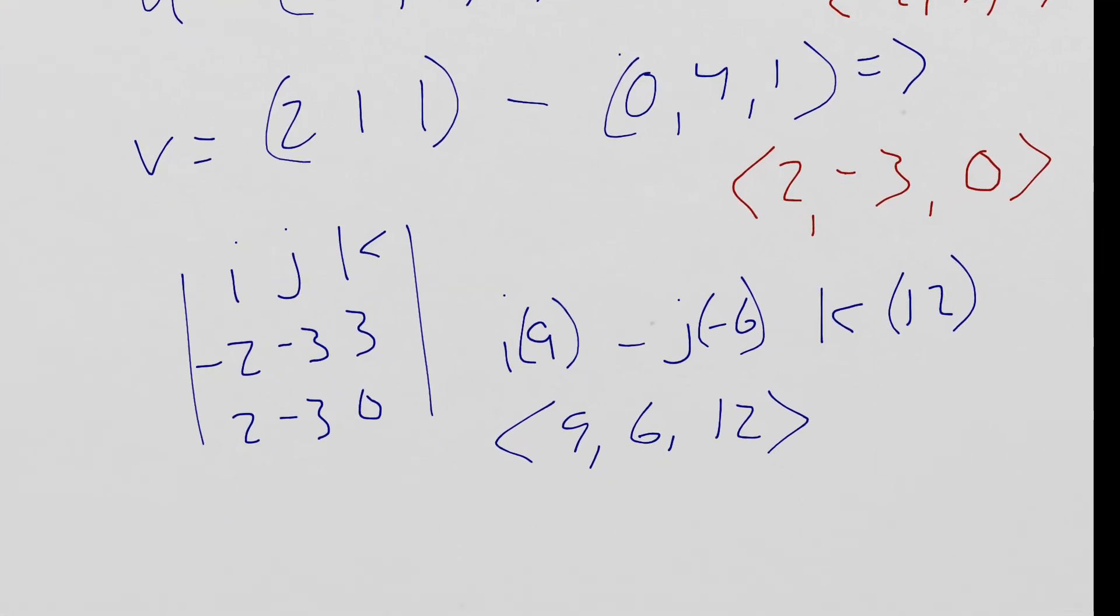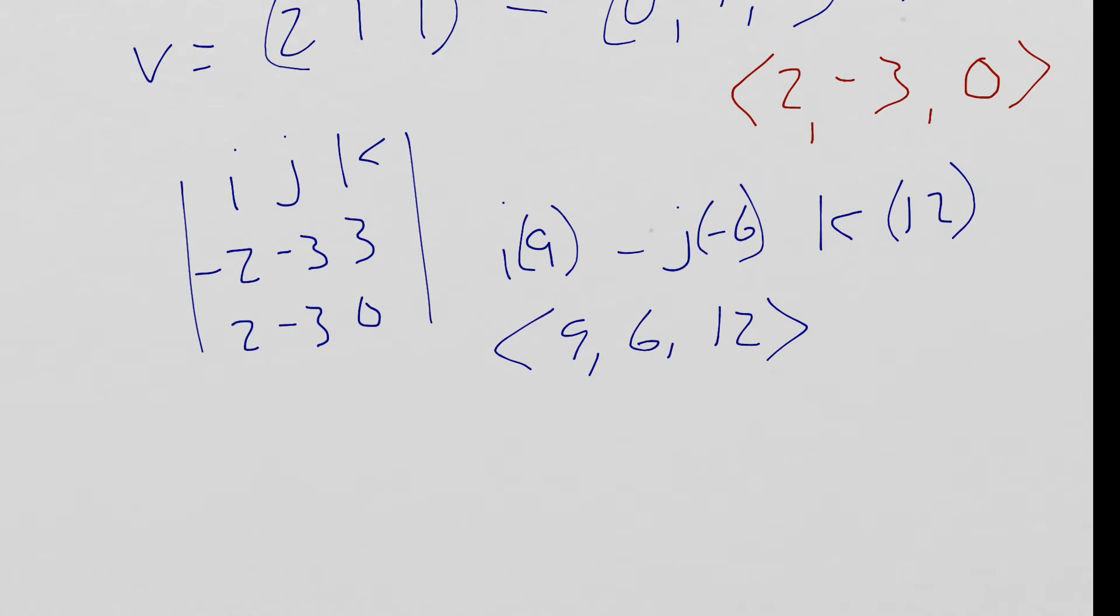Now we have to take the cross product of those two. So here I have that set up. I negative J positive K. To get this 9, it's going to be negative 3 times 0 minus 3 times negative 3, 9. To get this negative 6, it's negative 2 times 0 minus 3 times 2, negative 6. Lastly, to get 12, it'll be negative 2 times negative 3 is 6 minus negative 3 times 2. So 6 minus a negative 6, you get a positive 12. So these, this is going to be your A, B, and C.